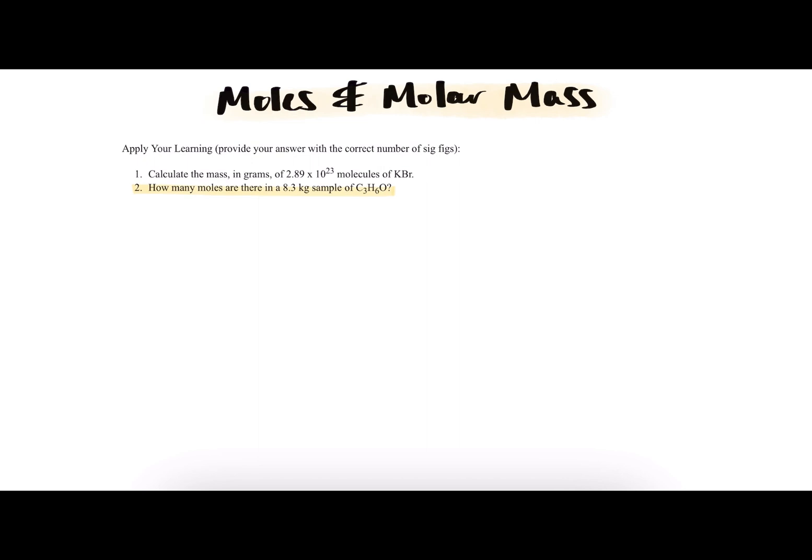Since we're given the mass of C3H6O and we're asked for the moles, we can use the molar mass to convert from mass to moles. The molar mass is found by adding up the mass of each individual component to find how much the entire compound will have.